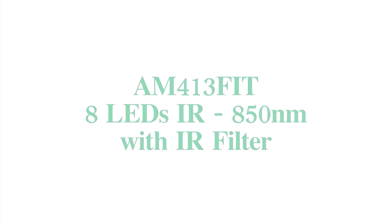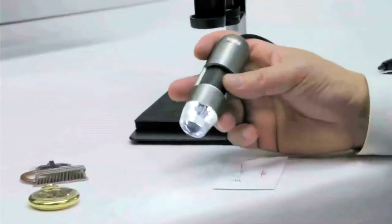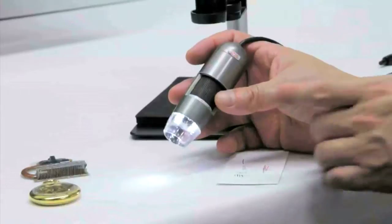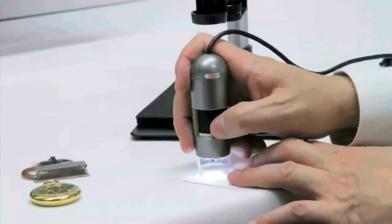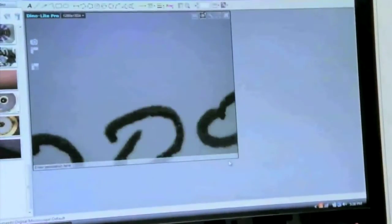The AM413FIT microscope has an infrared filter. This features 8 LED lights tuned at 850 nm wavelength. This is ideal for distinguishing between an assortment of different and unique inks and other materials alike.